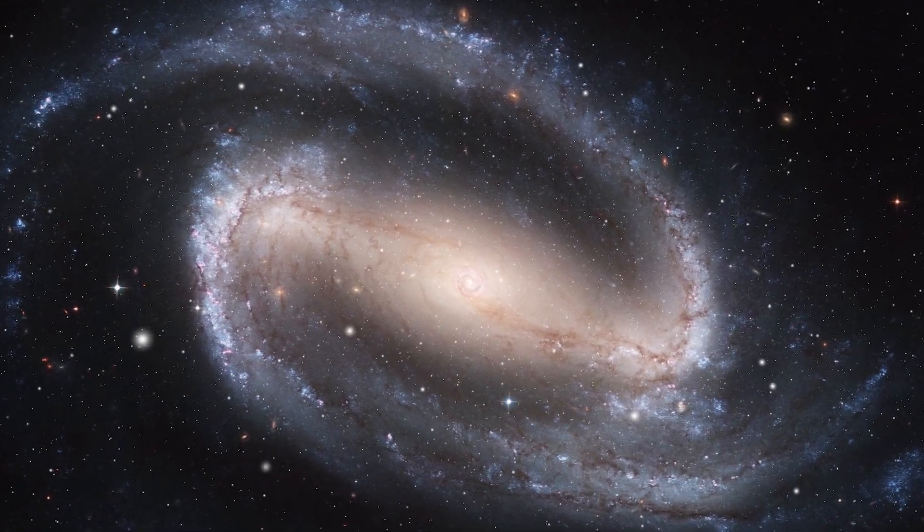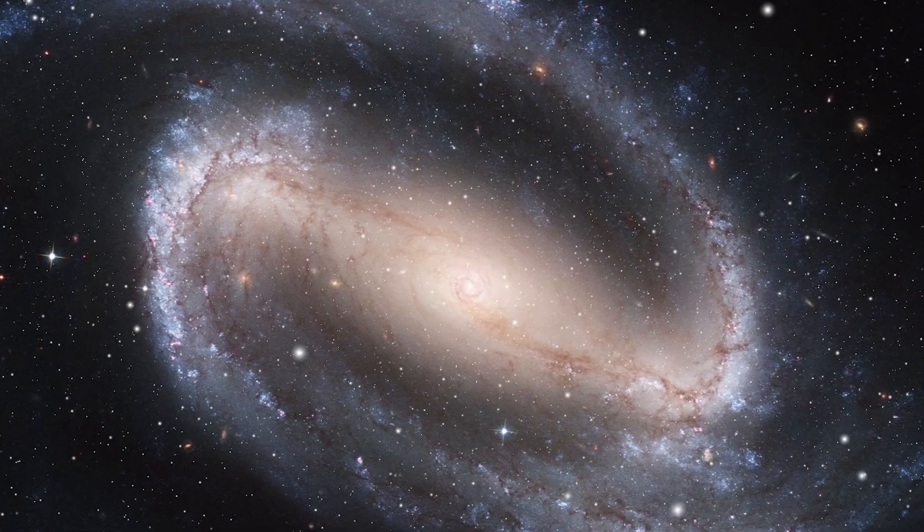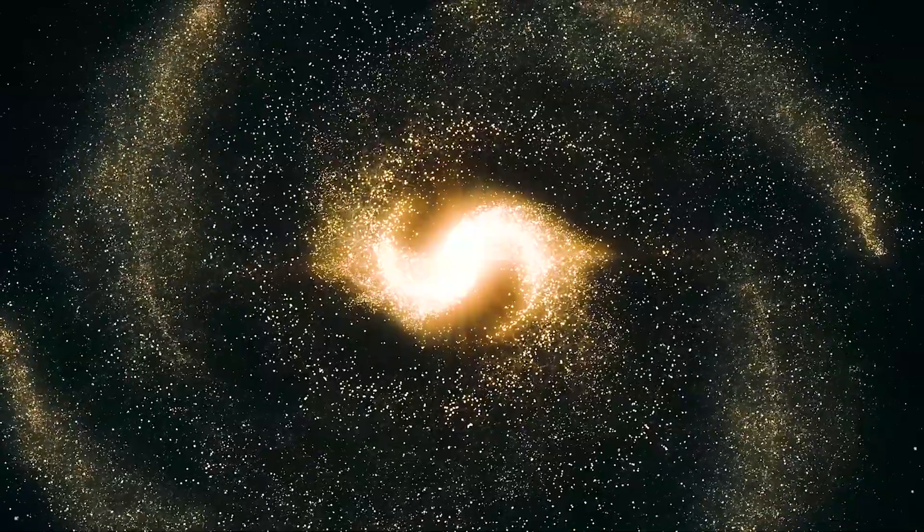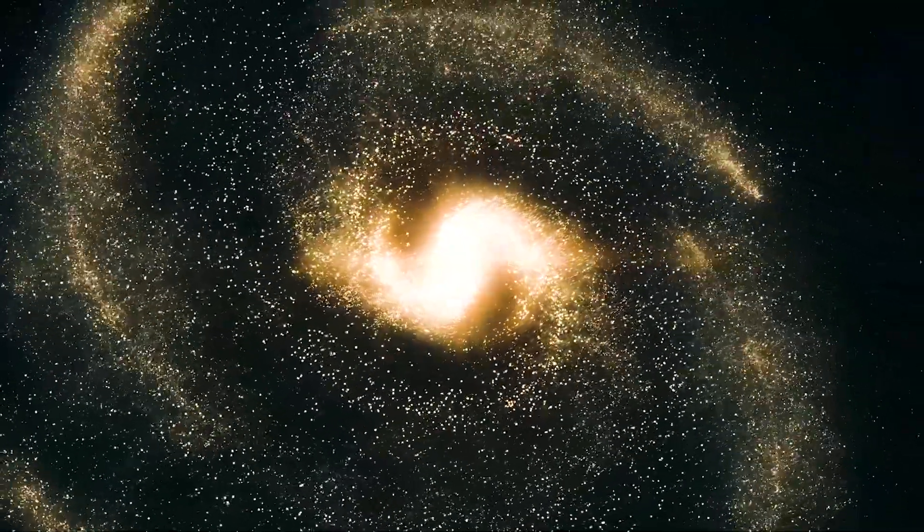A barred galaxy is a galaxy with a central bar-shaped structure of stars. Bars are found in up to 65% of spiral galaxies.